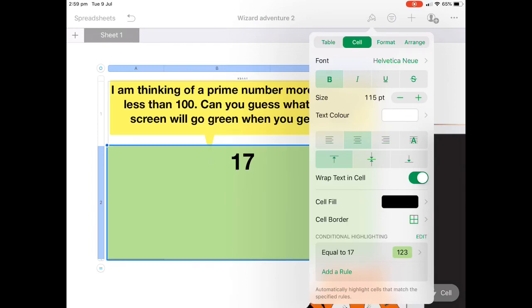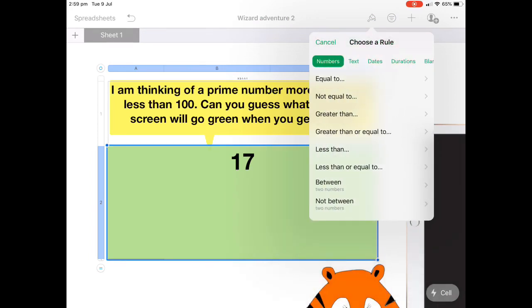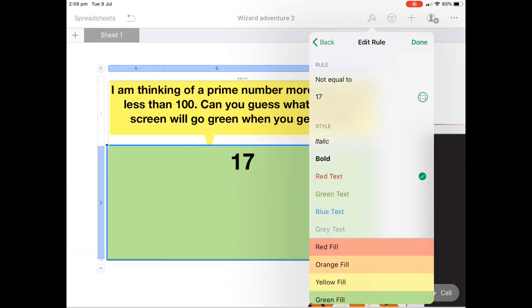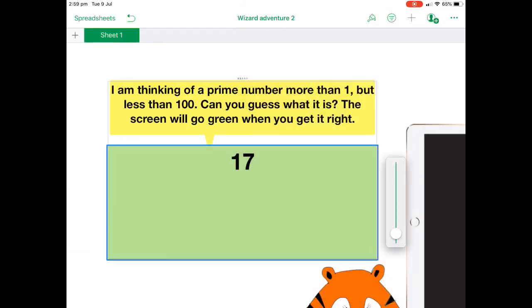When it's not 17, we actually would like it to stay red. And you could use a range of different colors. You could get colder and hotter as they get closer to it and a whole range of different things, create multiple rules. And so that's basically it.